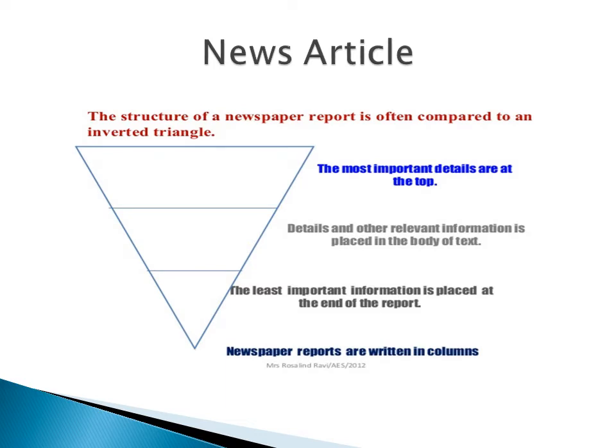The structure of newspaper reports is often compared to an inverted triangle. Please take a look at the diagram. The most important details are at the top. Details and other relevant information is placed in the body of text. The least important information is placed at the end of the report. Newspaper reports are written in columns — you have to remember that.